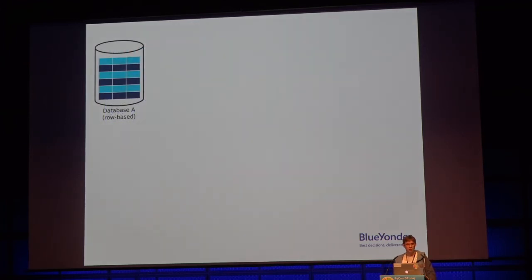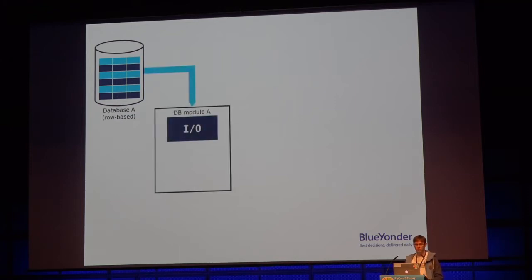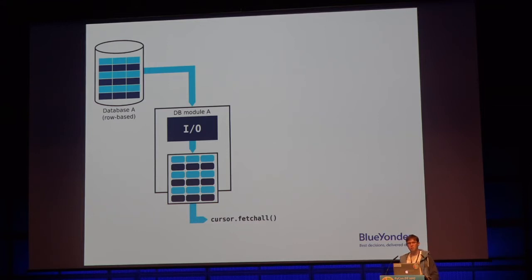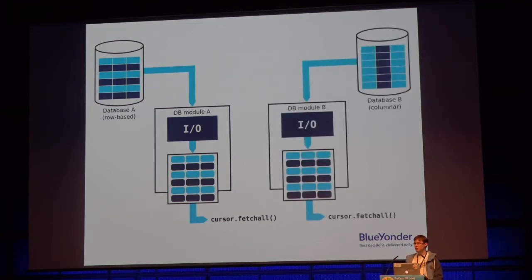In practice, you have many different databases. For example, a database by vendor A may store data in a row-wise fashion — rows in a contiguous memory range. That vendor kindly offers a database module for Python that will internally do some I/O using some C API or Python directly. Once this I/O is done, you have a translation layer that breaks up individual values from the database into individual Python objects — those are what you get when you call cursor.fetch_all. Of course you don't only have one database; you may have multiple databases, like a columnar database which stores columns in a contiguous fashion.